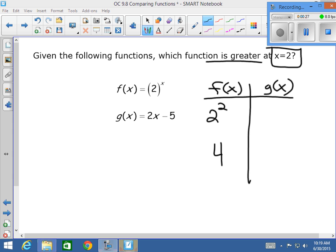On the right-hand side, we have 2 times 2 minus 5. 2 times 2 is 4. 4 minus 5 is negative 1. 4 is bigger, which means f of x is your final answer.